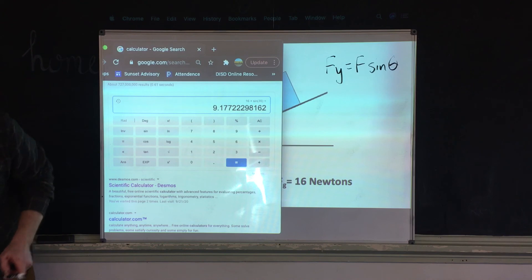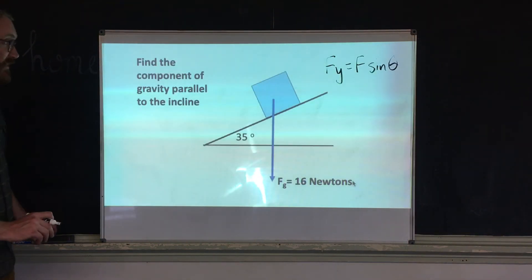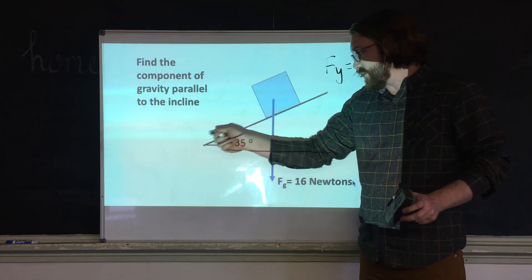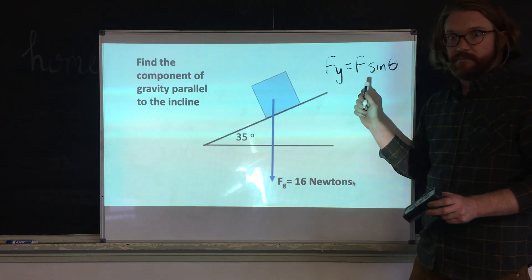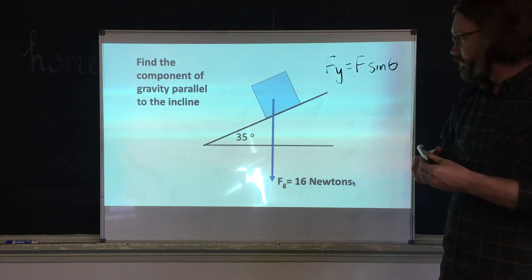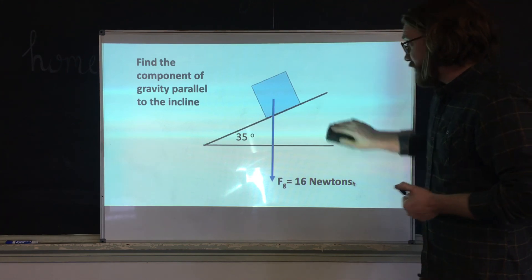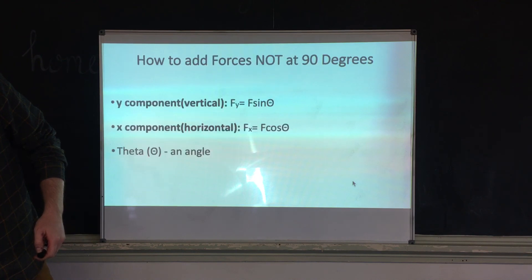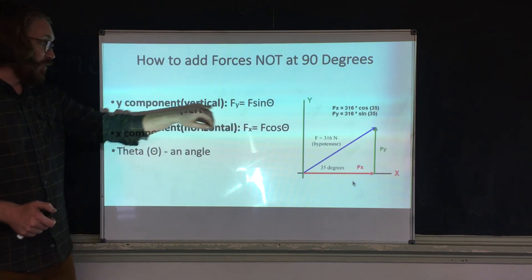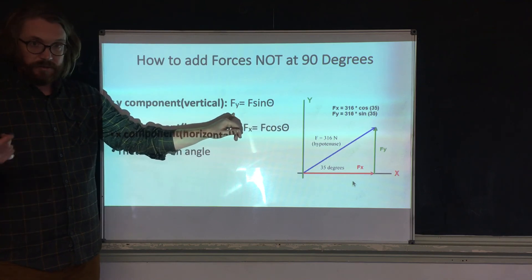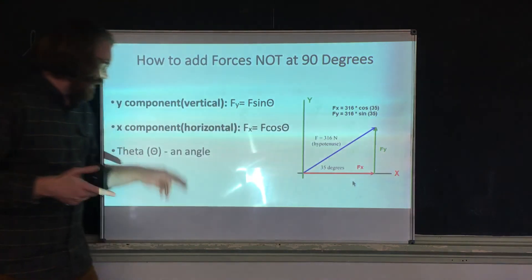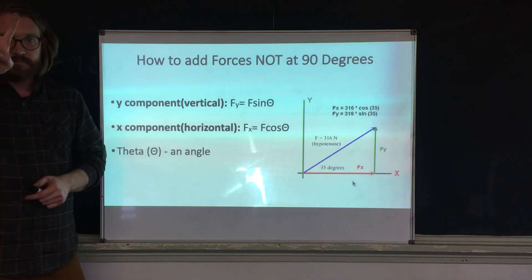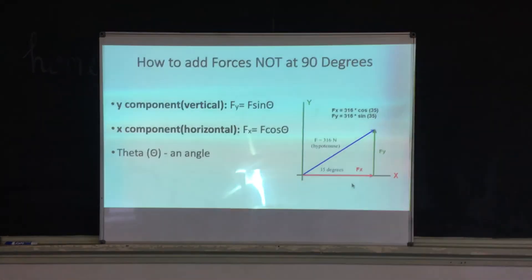That's a rare 'big dog' problem but good to know. For ramps, you're always going to find the parallel component, and it's always going to use sine. The big takeaway for today: if you're looking for the vertical component, use sine — that's Fy. If you're looking for the horizontal component, use cosine — that's Fx. Alright, have a great day!